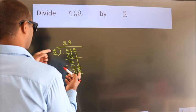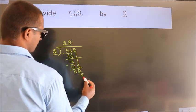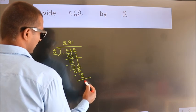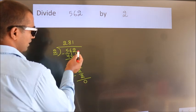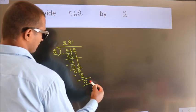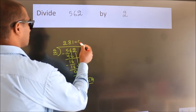When do we get 2? In 2 table, 2 1's, 2. Now, we subtract. We get 0. No more numbers to bring it down. So, we stop here. This is our remainder. This is our quotient.